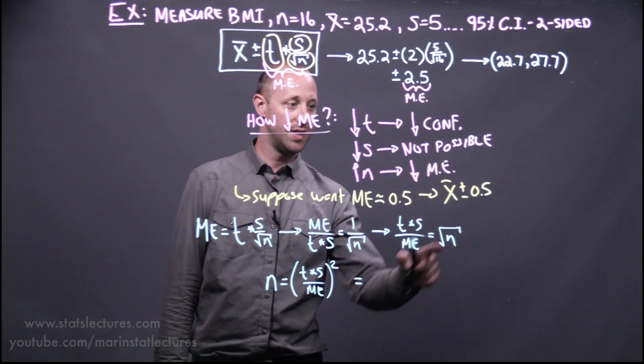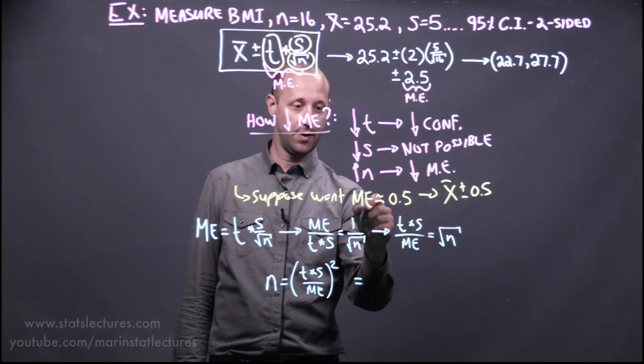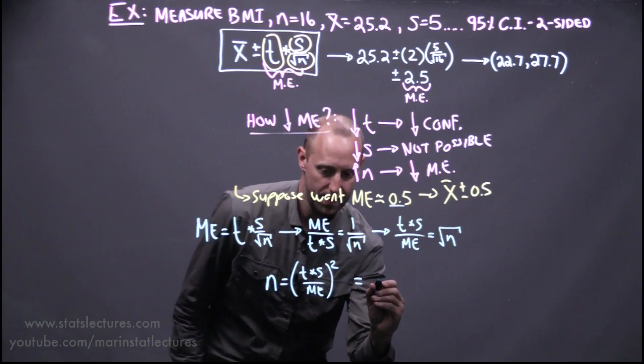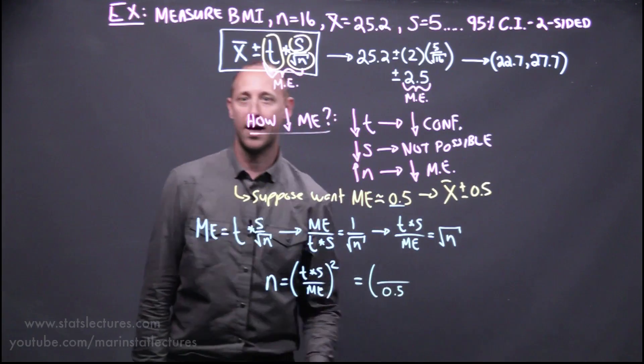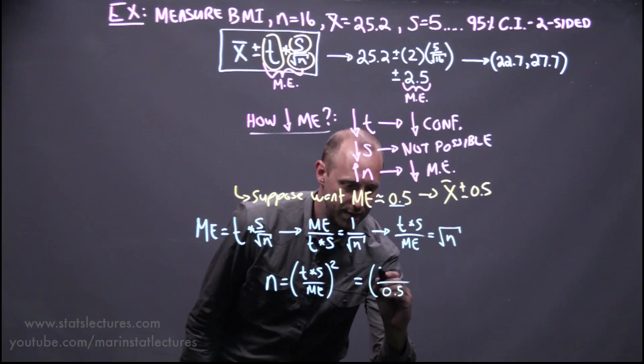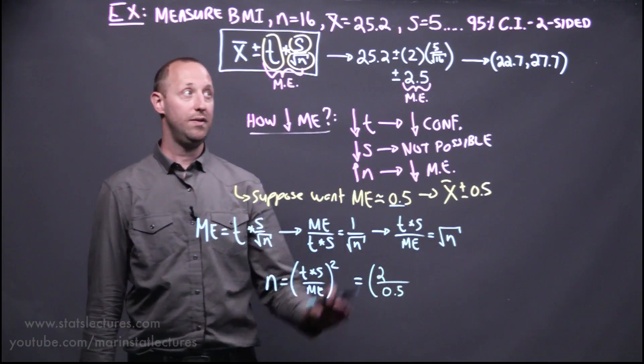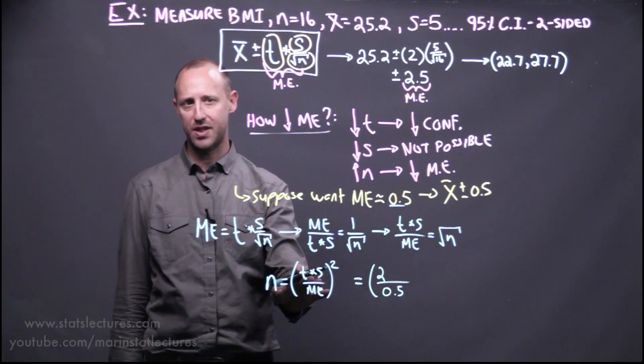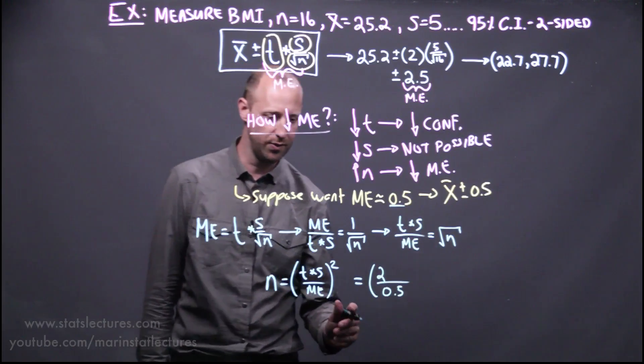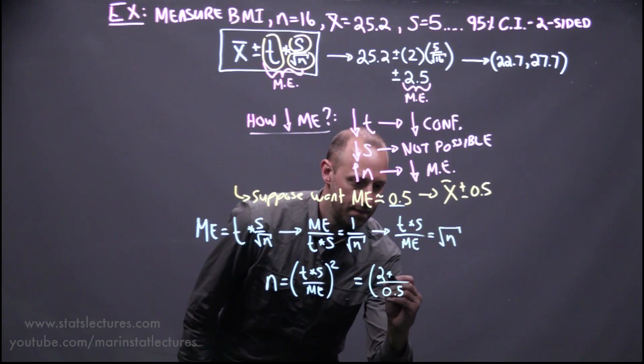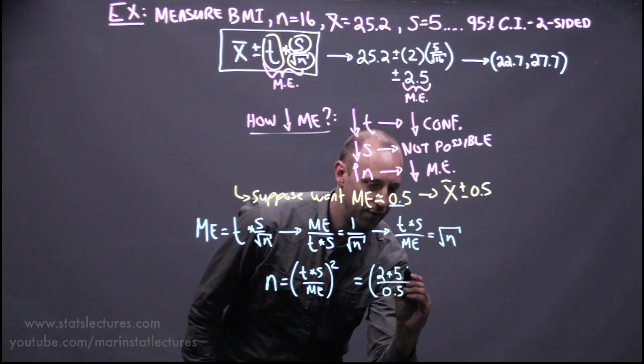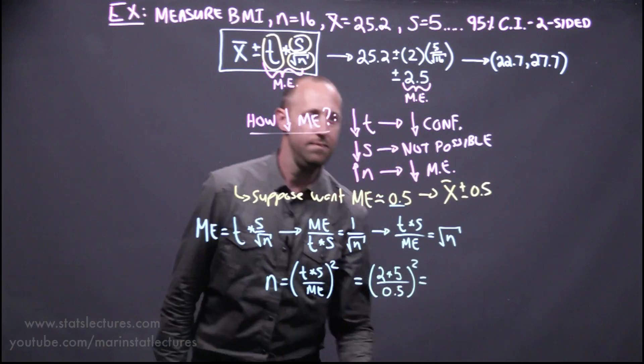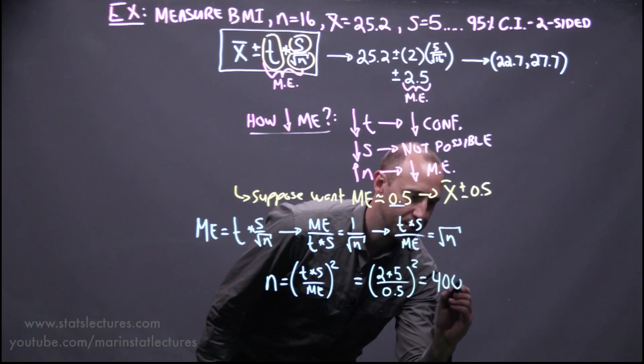So in this example here, we said we'd like to have a margin of error of 0.5. I'm going to sub in the rough t-value of 2. If we want 95% confidence, we're going to use a t-value or a z-value of approximately 2. And our sample standard deviation of 5. And if we work this out, it's going to come out to be 400.